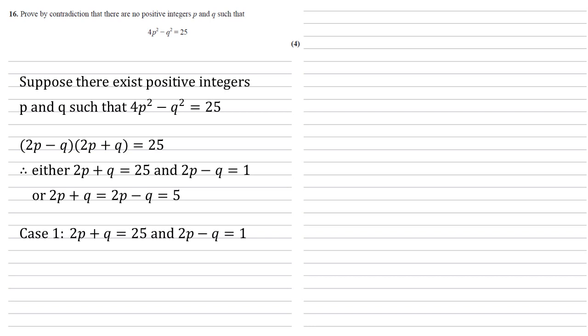So if we add them together the q's would cancel. We would get 4p = 26, hence p = 6.5. But we've assumed that p is a positive integer, so we've got a contradiction here because 6.5 isn't an integer. Case 1 doesn't work.